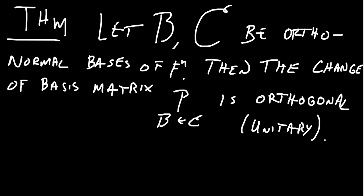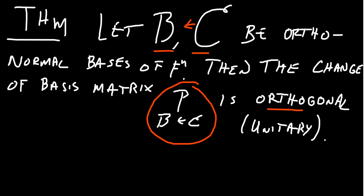A consequence of this: if we have two orthonormal bases B and C for our space F^n, then the associated change-of-basis matrix from C to B will also be an orthogonal or unitary matrix.